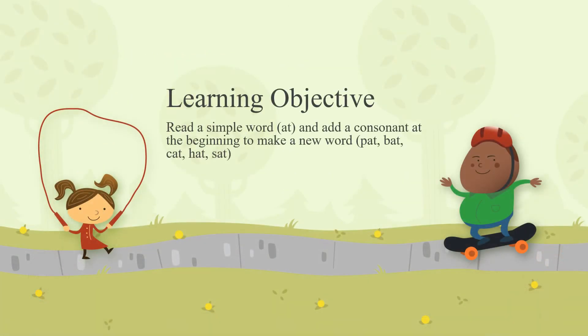The learning objective for my kindergarten students was to read a simple word and add a consonant at the beginning to make a new word. The simple word was 'at,' and the consonants at the beginning could be P, B, C, H, S, or any other letter that would make a word.